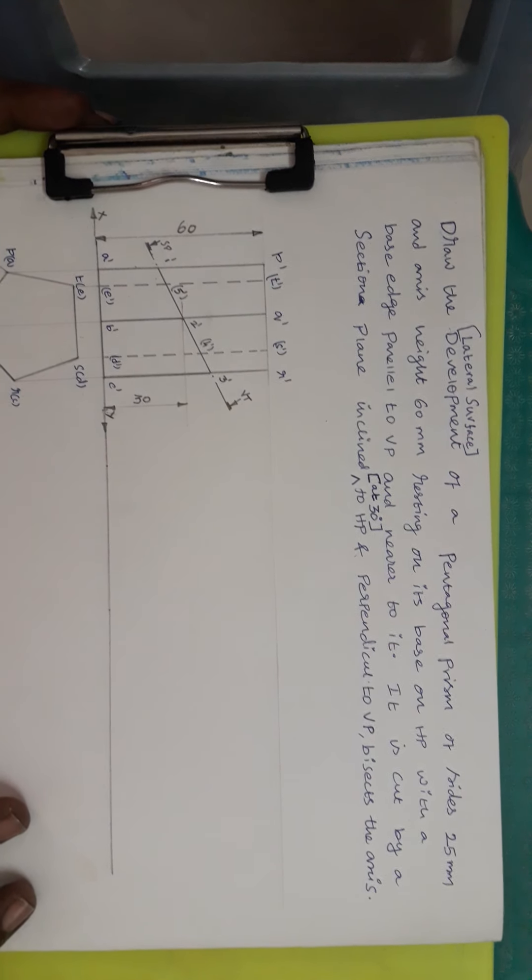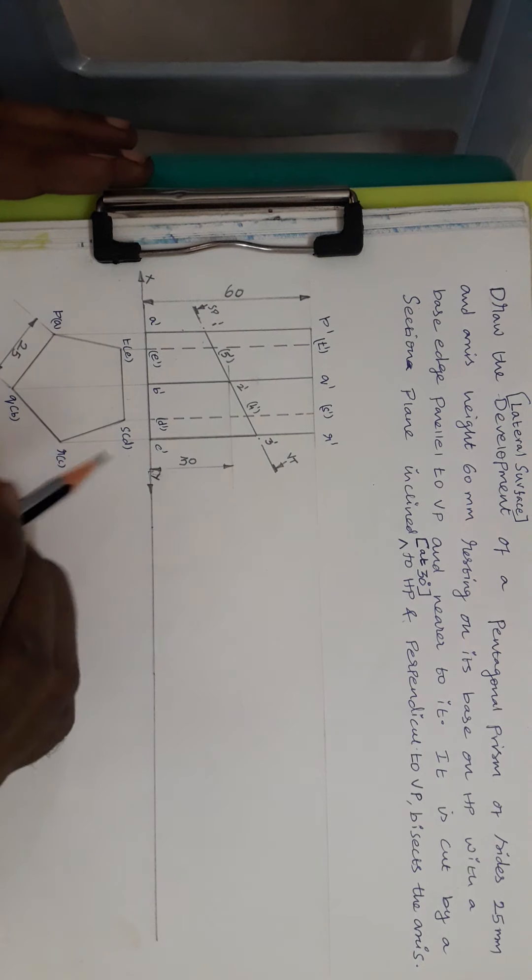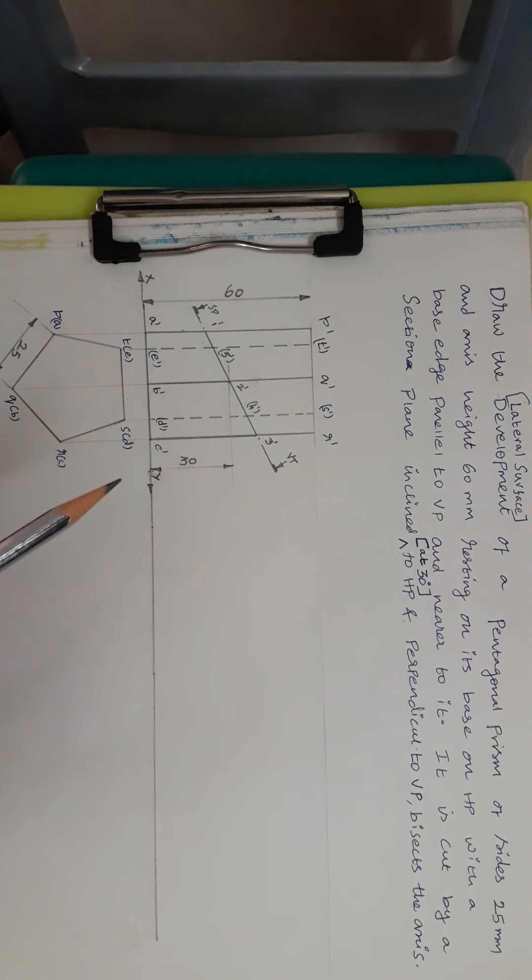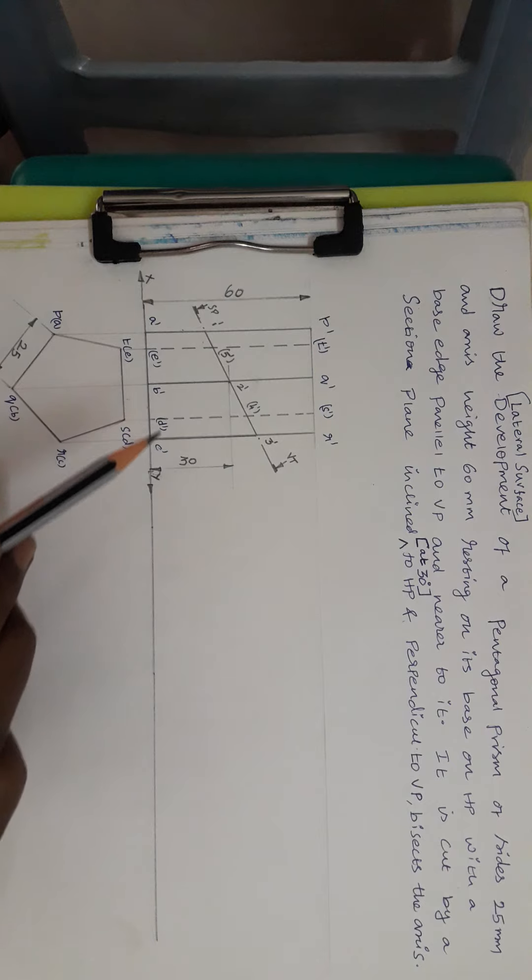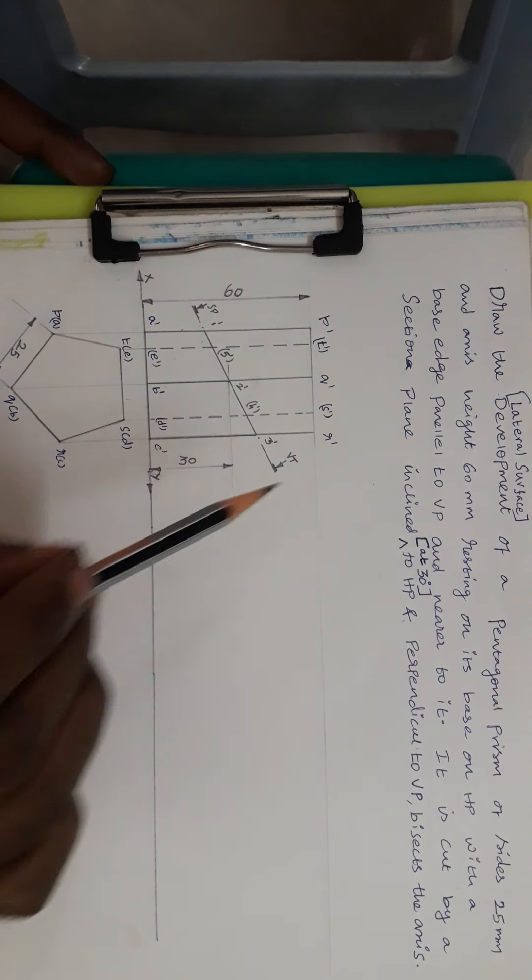In the previous section, we could have learnt about how to draw the projection for a prism when it is resting on its base on HP as well as when it is resting on a point or when it is resting on an edge or corner and so on. This is the basic we have to know for the development.